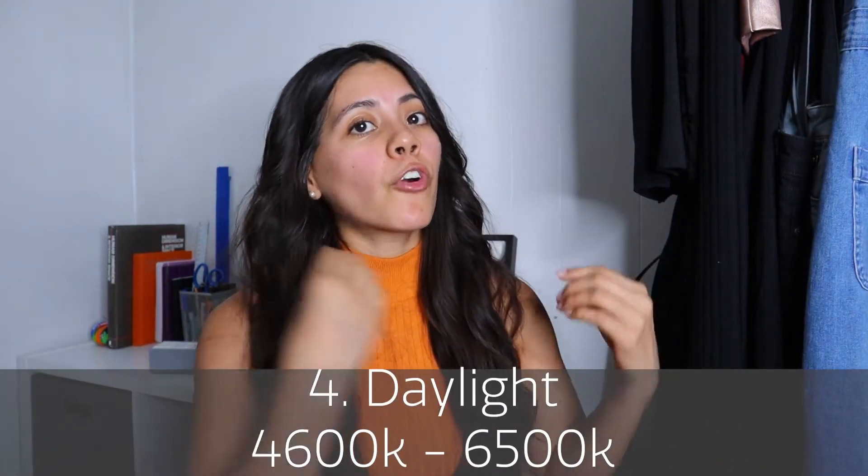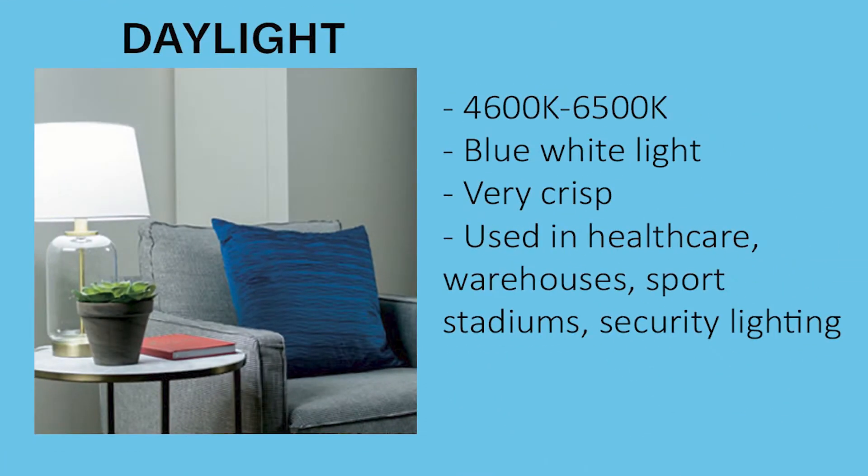The fourth type of lighting is daylight — this one measures 4,600 to 6,500 K. As you can tell, I'm kind of being blinded right now. This one gives off a blue-white light to mimic daylight; it is a very crisp light used in professional spaces where bright illumination is needed and where you need to be extra focused — like healthcare facilities, warehouses, and sports stadiums — because they want you to be alert and watch what you are doing.